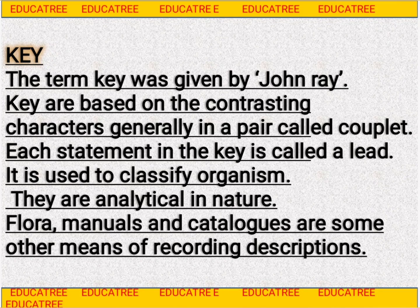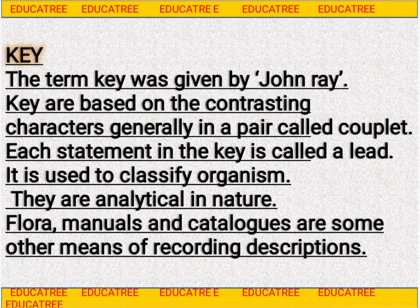Besides these main aids, there are also flora, fauna, manuals, catalogs, and monographs. Flora means a book that mentions all plant species with their complete details and number of species in an area. Fauna means a book listing all animal species with their scientific names. A catalog is a small book describing plant or animal species. Manuals are used to identify species in a particular area. A monograph is a pamphlet-like structure containing all details of one particular species and is sufficient on its own.